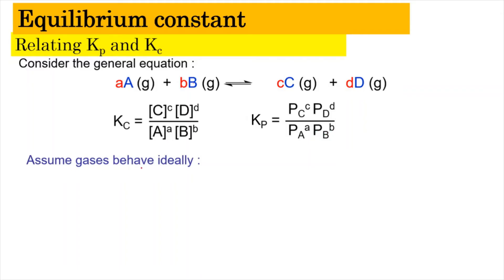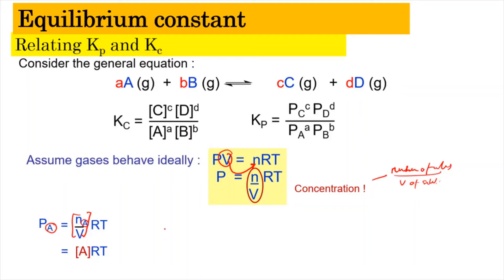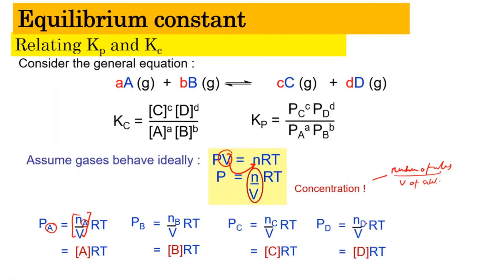If we assume the gas behaves ideally, PV = nRT, and rearranging gives P = (n/V)RT. Since n/V refers to concentration, we get P = [concentration] × RT. So for each species: Pa = [A]RT, Pb = [B]RT, Pc = [C]RT, and Pd = [D]RT.